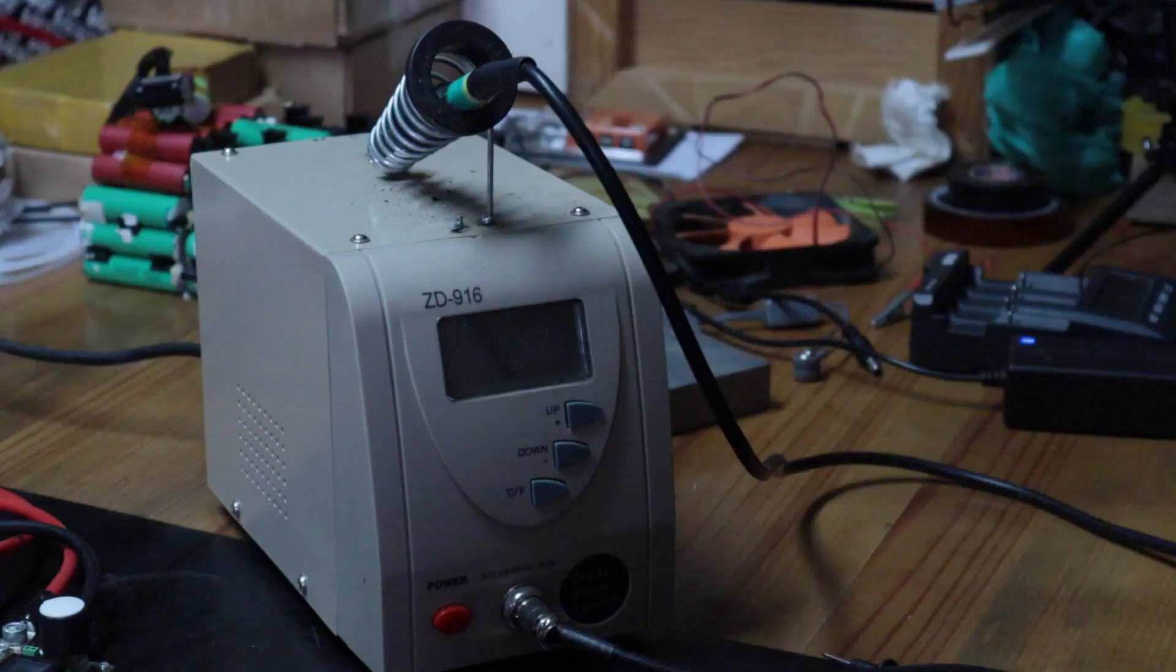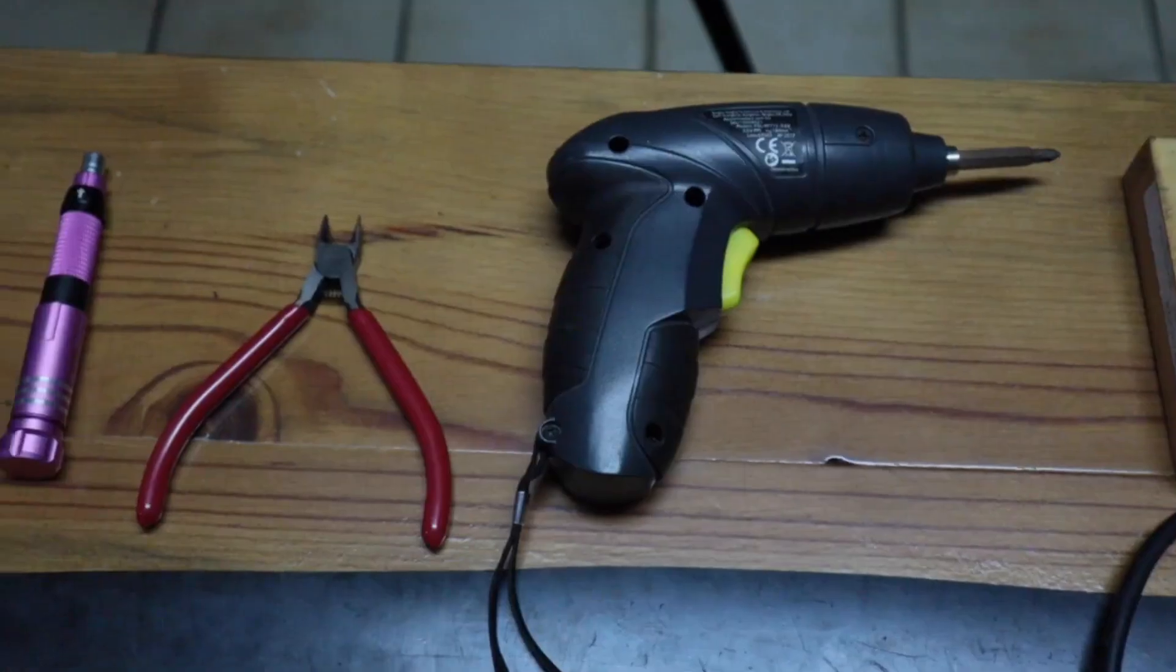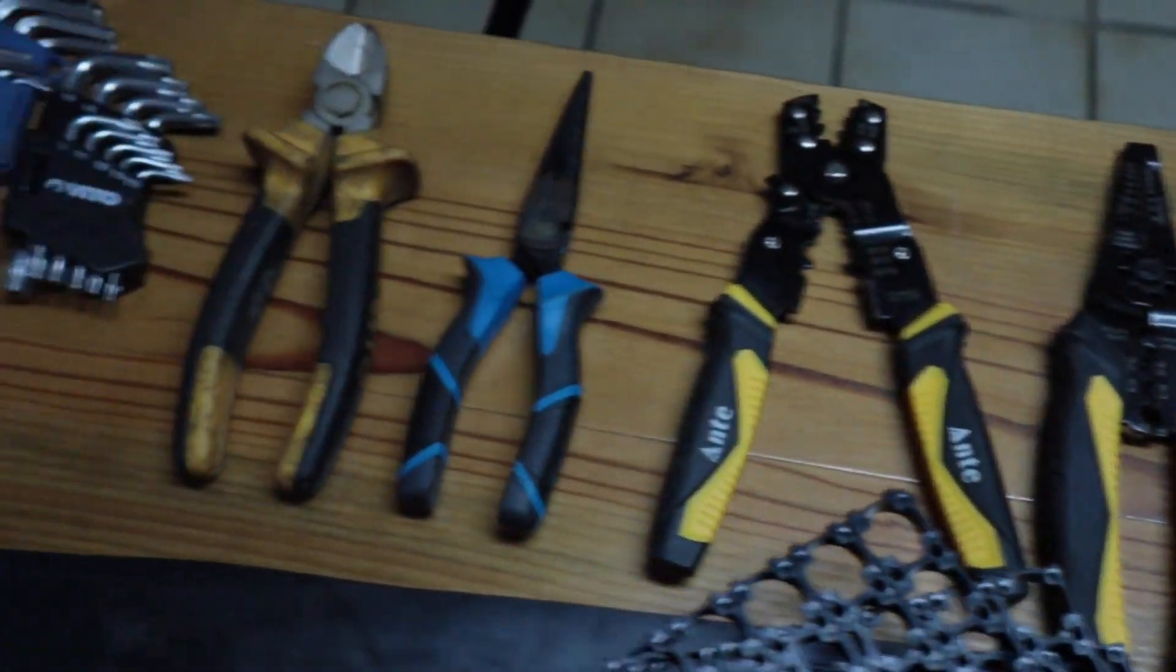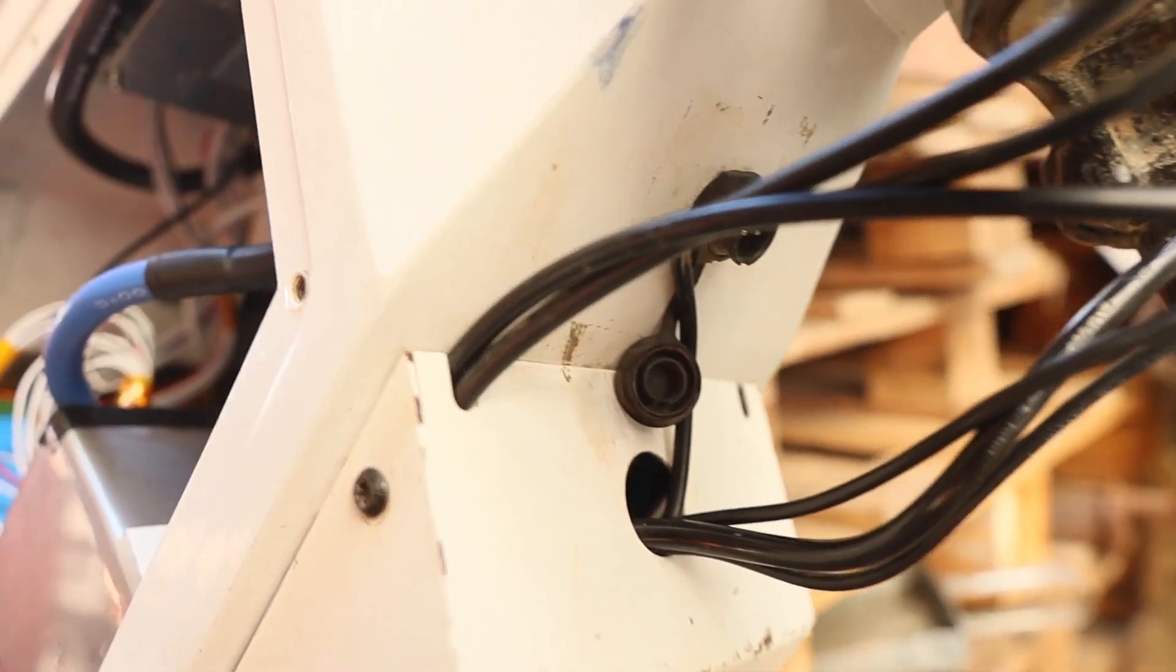Moreover, we'll need some other tools like a soldering iron, kapton tape, metal scissors, pliers, a multimeter, and one of the most important, a BMS to protect our battery.